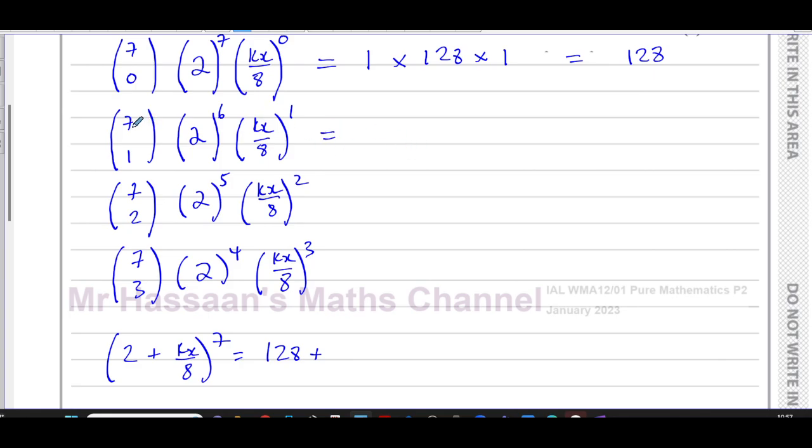now I'm going to get the second term. So I have 7c1, which is seven, two to the power of six, which is 64 times kx over eight to the power of one, which is kx over eight. Now to simplify this, the eight cancels with the 64, leaving you with eight up there, seven times eight is 56. So you have 56 times kx, the next term.